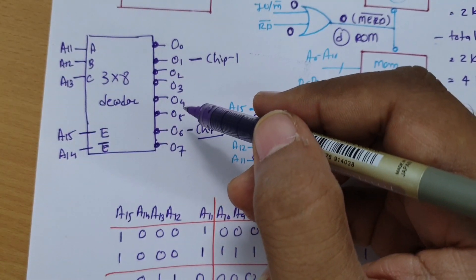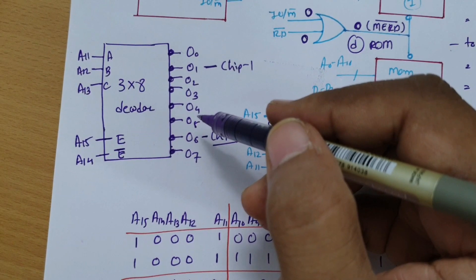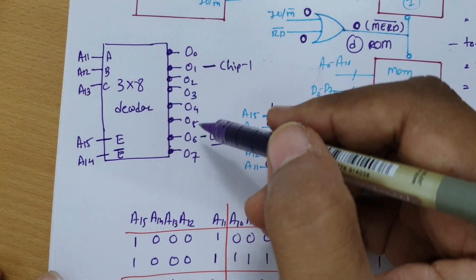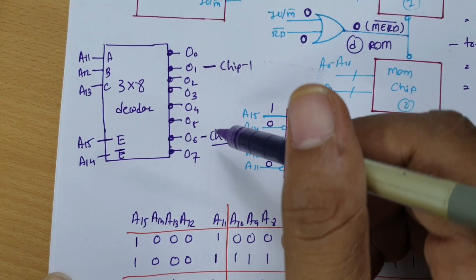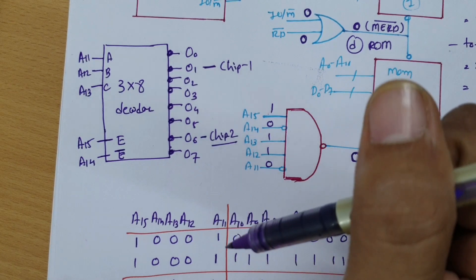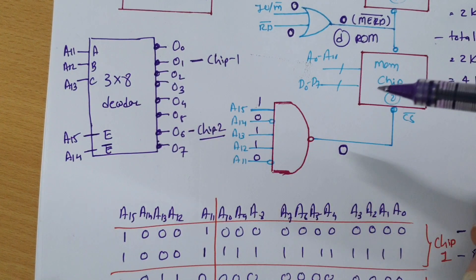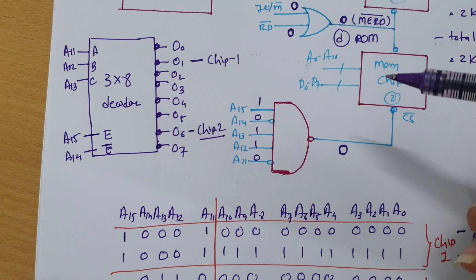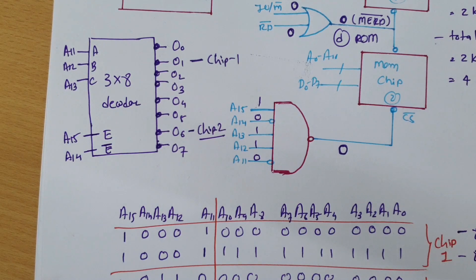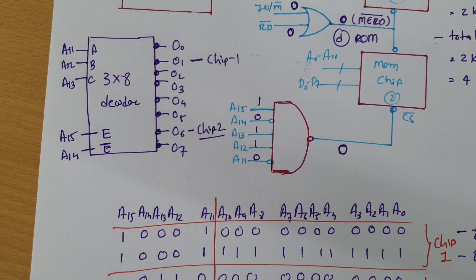That is how you connect chip 1 and chip 2 using a 3×8 decoder. I hope you have understood this. These types of questions are essential in the GATE examination, so practice is important. If you don't understand something, please leave comments so I can address the issues in my explanation. Thank you so much for watching.